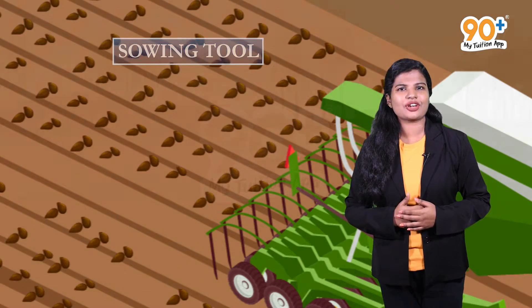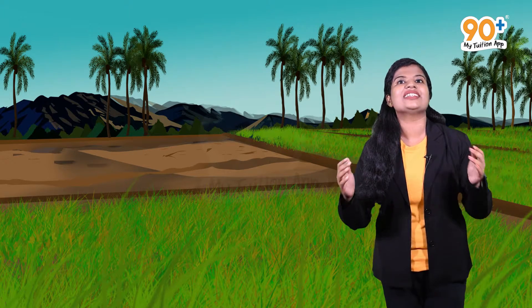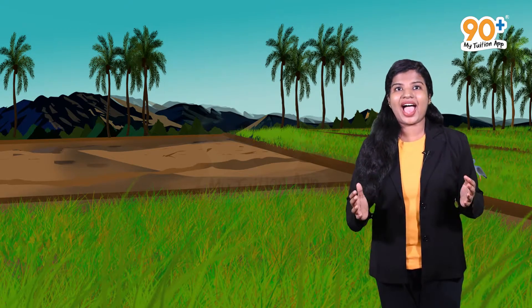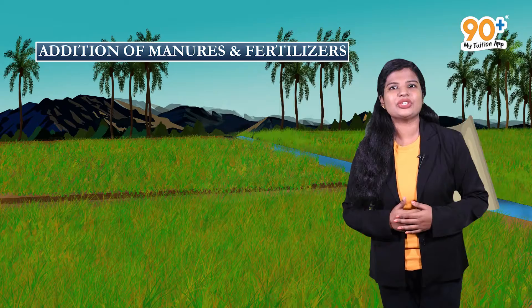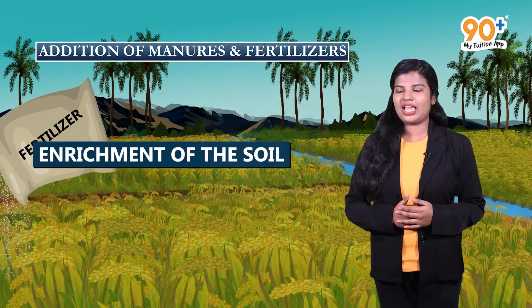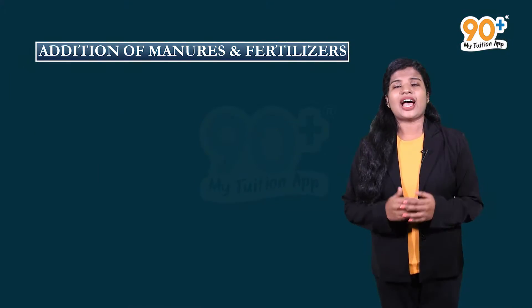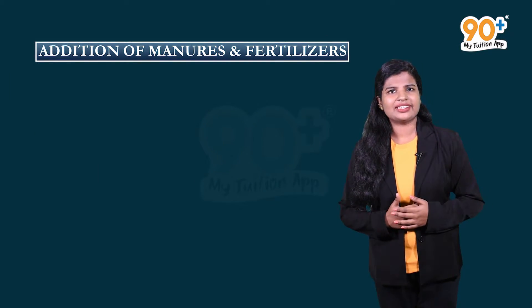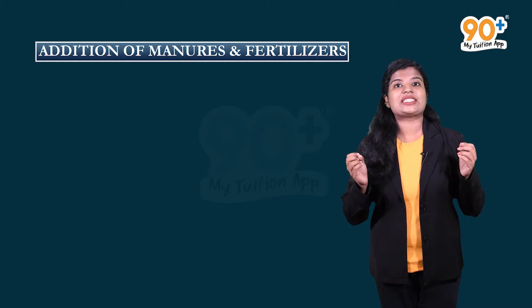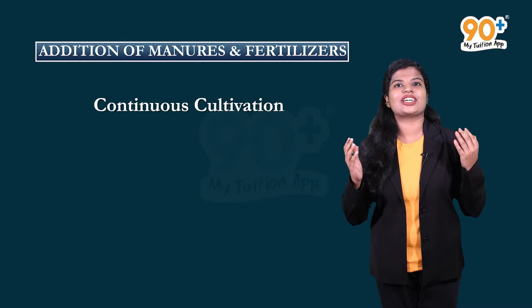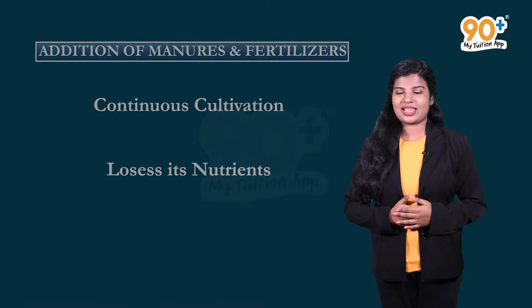So that crops can get enough nutrients, water, and sunlight, our soil is prepared and sowed. It's time to add manure and fertilizers. Manure and fertilizers are added in the form of nutrients for enrichment of the soil. Even though soil has its own nutrients, when crops are cultivated continuously the soil loses its nutrients. By adding manure and fertilizers, the soil regains those nutrients.